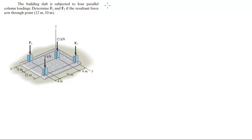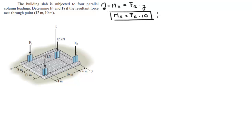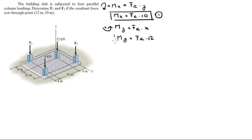Assuming clockwise is positive, the sum of the moments in x is equal to FR times y, so M of x is equal to FR times 10. Call this equation 1. Same thing goes for M of y: M of y is equal to FR times x, and assuming counterclockwise is positive, M of y is equal to FR times 12. Call this equation 2.